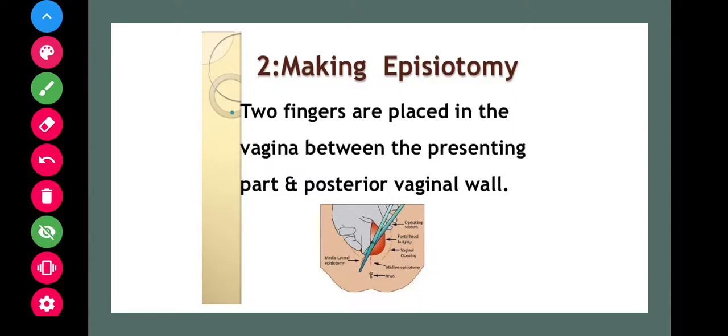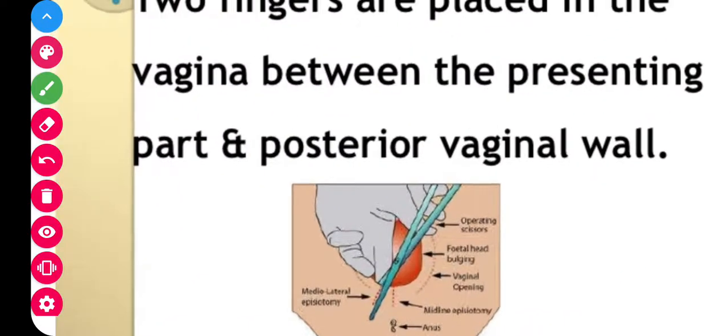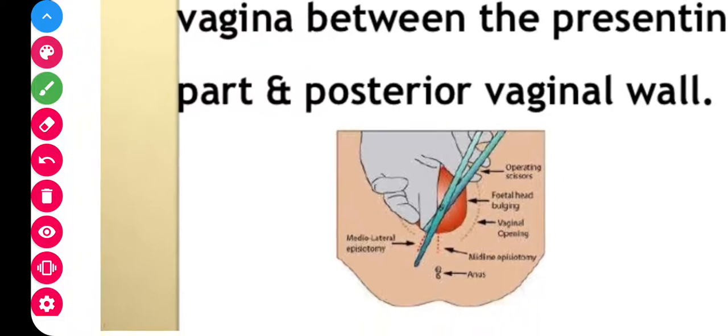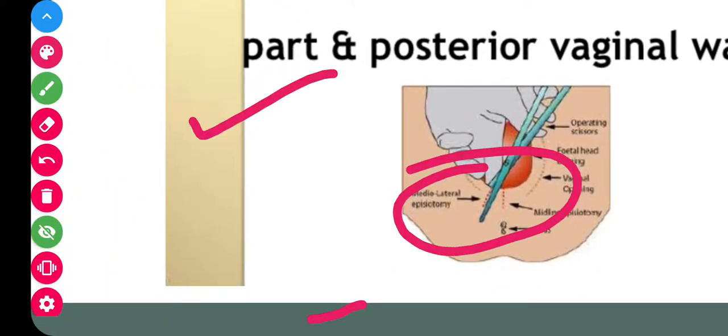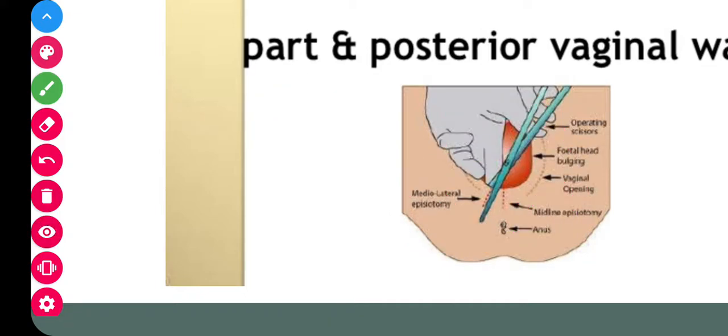Making episiotomy: two fingers are placed in the vagina between the presenting part. Here you can see between the presenting part. This is presenting part, the fetal head, then posteriorly we need to keep two fingers.